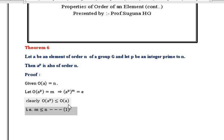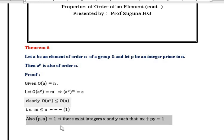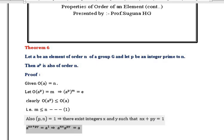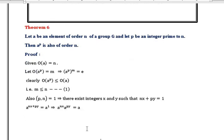Consider this as Equation 1. And also, P and n are relatively prime, which implies there exist integers x and y such that nx + py = 1. Therefore A^(nx + py) = A^1, which implies A^(nx) · A^(py) = A.